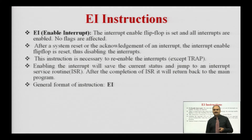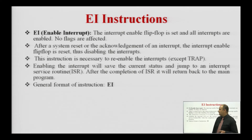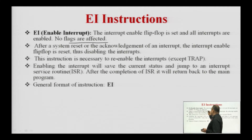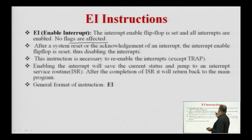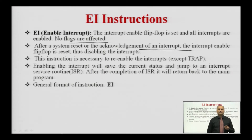Next instruction is EI, also called enable interrupt. This instruction is used to enable the internal interrupt enable flip-flop. With EI, the interrupt enable flip-flop is set and all interrupts are enabled; no flags are modified. After a system reset or the acknowledgement of an interrupt, the interrupt enable flip-flop is reset, thus disabling the interrupts. A reset signal is also a kind of interrupt acknowledgement signal. The interrupt enable flip-flop is reset after a reset.